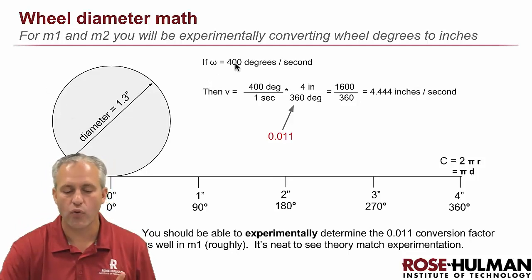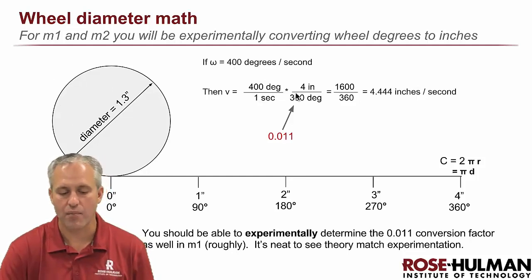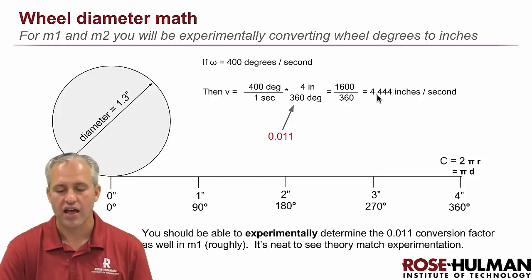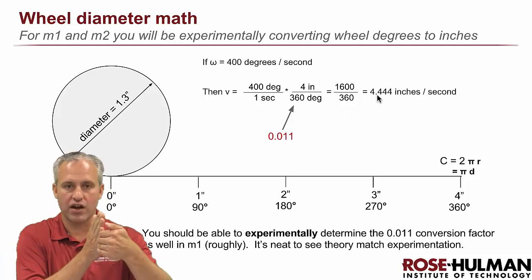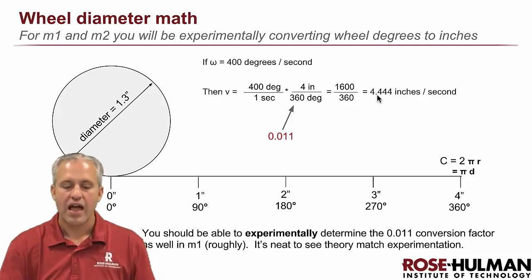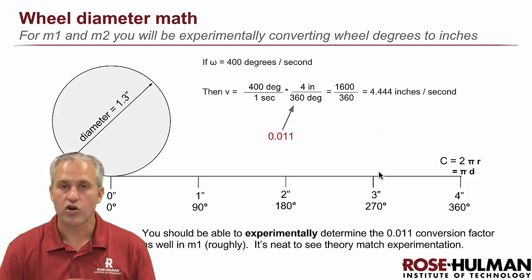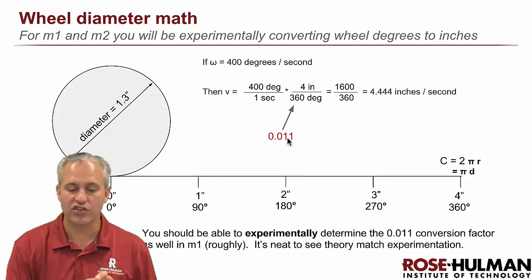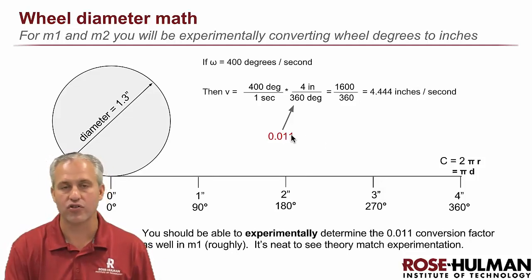So if we have 400 degrees per second, we can multiply that by our conversion factor, which is that 4 inches is equal to 360 degrees. So that's our conversion factor. And when you multiply that out, you can see that that omega of 400 degrees per second is about 4 inches in a second. And interestingly, you can determine that experimentally just by running some tests with different omegas and then figuring out what that V is.